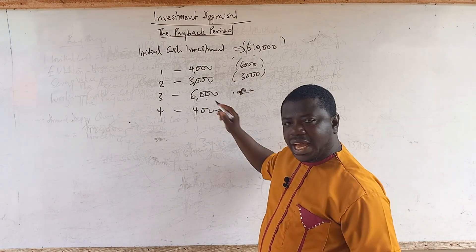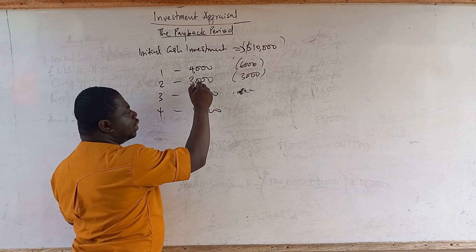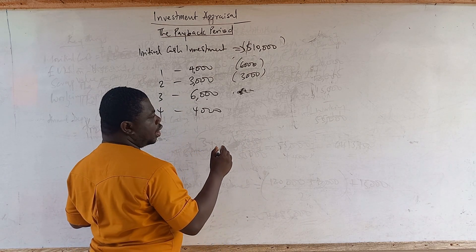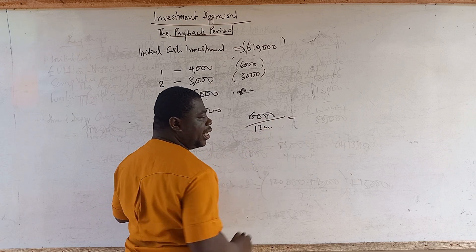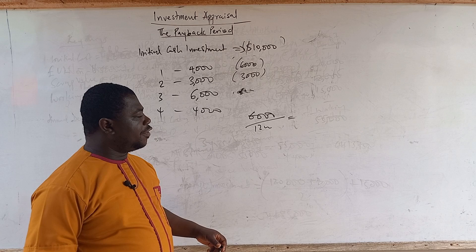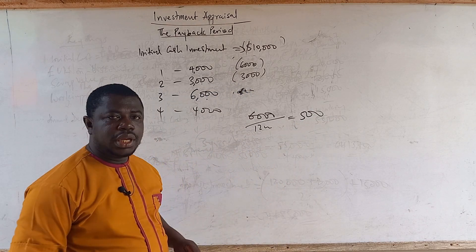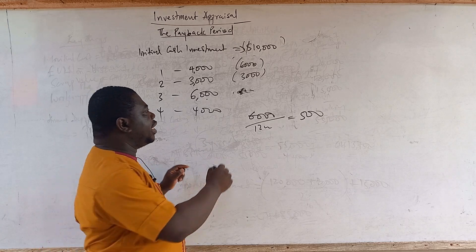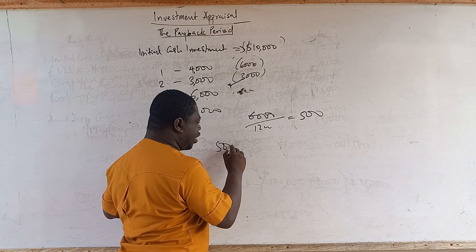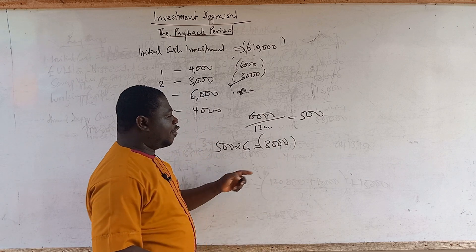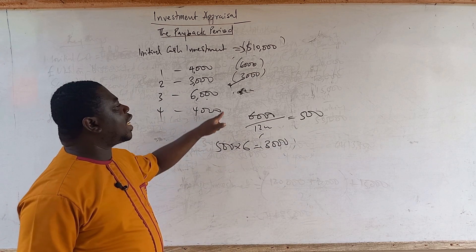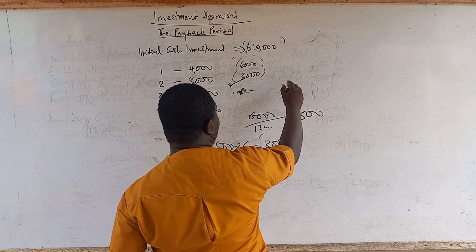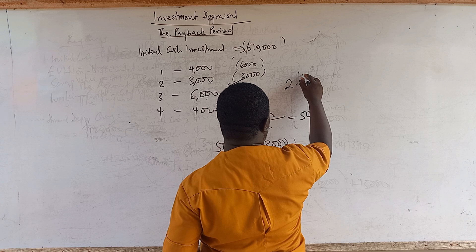For year three, between year two and year three, we got 6,000 in the year. So if we look at 6,000 over 12 months, every month the investment brings us $500. How many months will it take to get the 3,000 that was remaining? 500 times 6 months gives us 3,000. So it took 6 more months to recover the investment, and the payback period is 2 years and 6 months, or 2 and a half years.